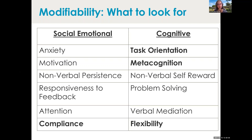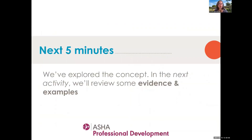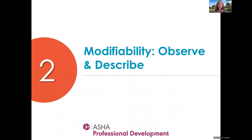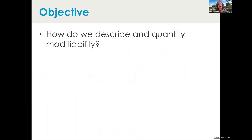The more support a child needs to orient to task, to understand the goal of the task, and the more help they need with flexibility, paying attention, and compliance, the more likely they are to have difficulties in the language domain. Now that we've explored the concept of modifiability, we're going to review some evidence and examples, and look at how to observe and quantify modifiability — because it's a really powerful tool, we need to be able to capture and describe it.